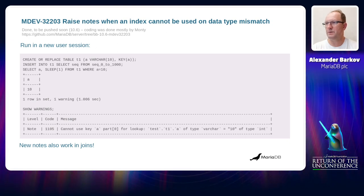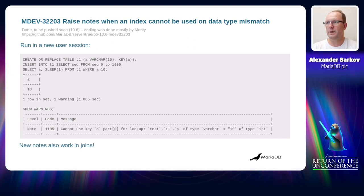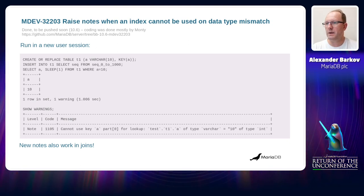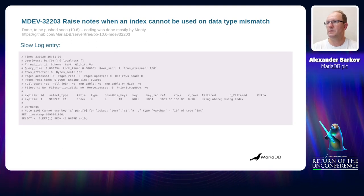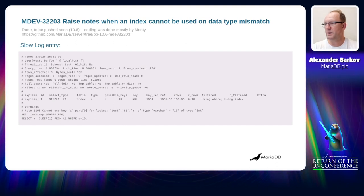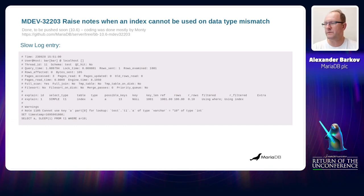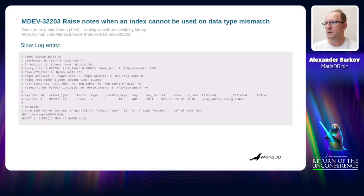Now if a statement uses a comparison predicate in the WHERE clause, or a LIKE predicate, or IN and BETWEEN predicates, and the index cannot be used, a new message gets added to the diagnostics area. You can type SHOW WARNINGS to see what was wrong. In this example, the message says that the key on column A wasn't used because the column A is of type VARCHAR, but the comparison is done as an integer, and indexes cannot be used in this case. These notifications work in case of joins as well. And in the slow log, there is a new part bringing exactly the same notes as in the SHOW WARNINGS output. This new feature makes debugging your queries much easier.